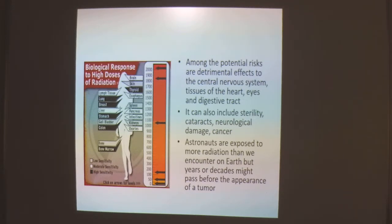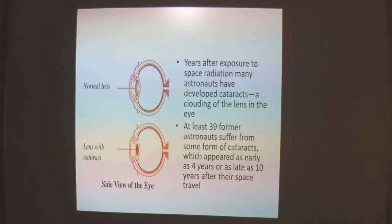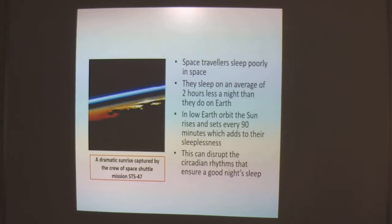Astronauts are exposed to more radiation than we encounter on Earth, but years or decades might pass before the appearance of a tumor. Years after exposure to space radiation, many astronauts develop cataracts — a clouding of the lens in the eye. At least 39 former astronauts suffer from some form of cataract, appearing as early as 4 years or as late as 10 years after their space flight. Space travelers also sleep poorly in space, averaging 2 hours less sleep per night than on Earth. In low Earth orbit, the sun rises and sets every 90 minutes, adding to their sleeplessness and disturbing the circadian rhythm that ensures a good night's sleep.